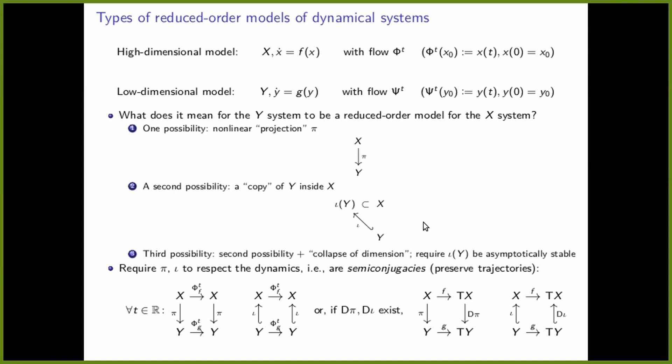If the maps happen to be differentiable, you can differentiate those diagrams and get an infinitesimal version as well. This talk is going to be about one class of systems which has reduced order models — a single reduced order model — which is simultaneously of all three types. These are normally attracting invariant manifolds, or NIMs for short.